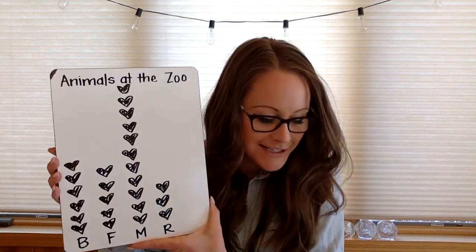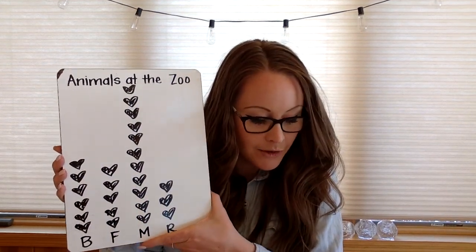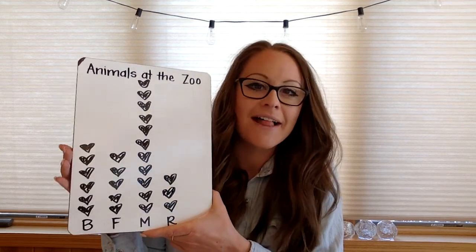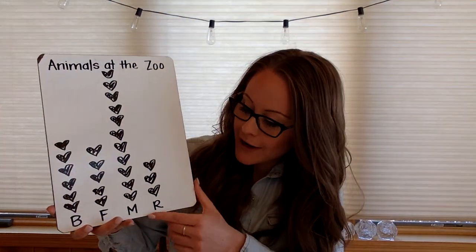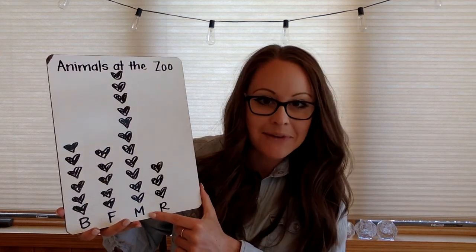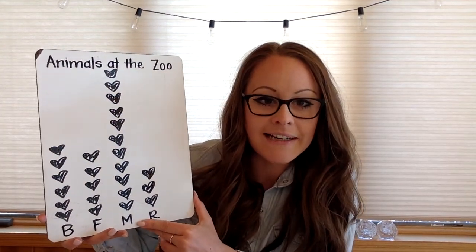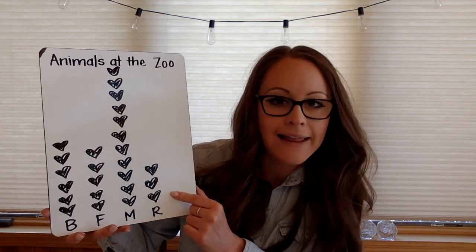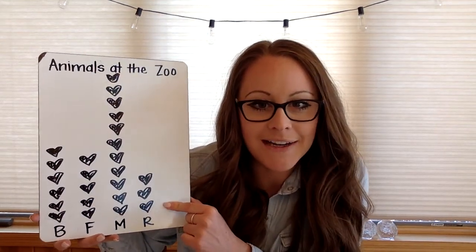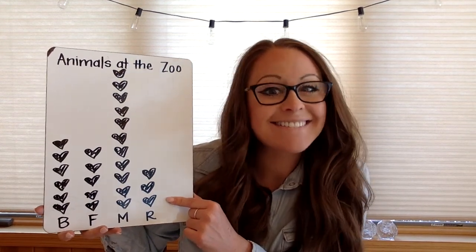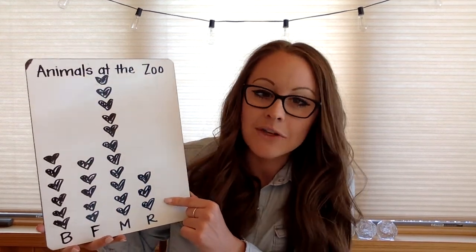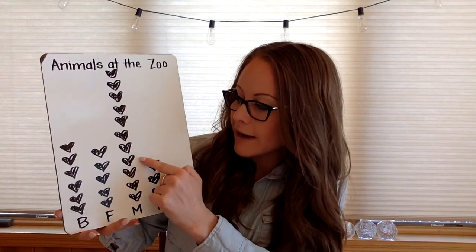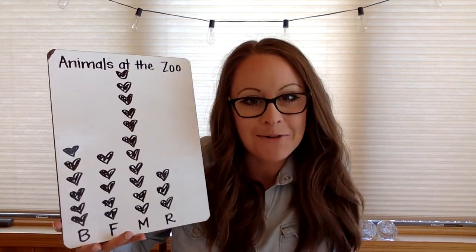We have one more question with this pictograph. It says: how many fewer animals are reptiles than mammals? So we're going to be comparing reptiles and mammals. We have 11 mammals and three reptiles, so we do 11 minus three — that's eight. Nice work. You could always see where they're equal and count up — that would work too.